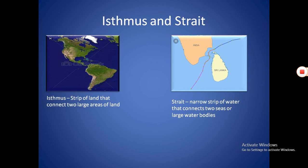A strait is a narrow strip of water that connects two seas or large water bodies. The Palk Strait between India and Sri Lanka is an example. An isthmus is a narrow strip of land that connects two large areas of land.